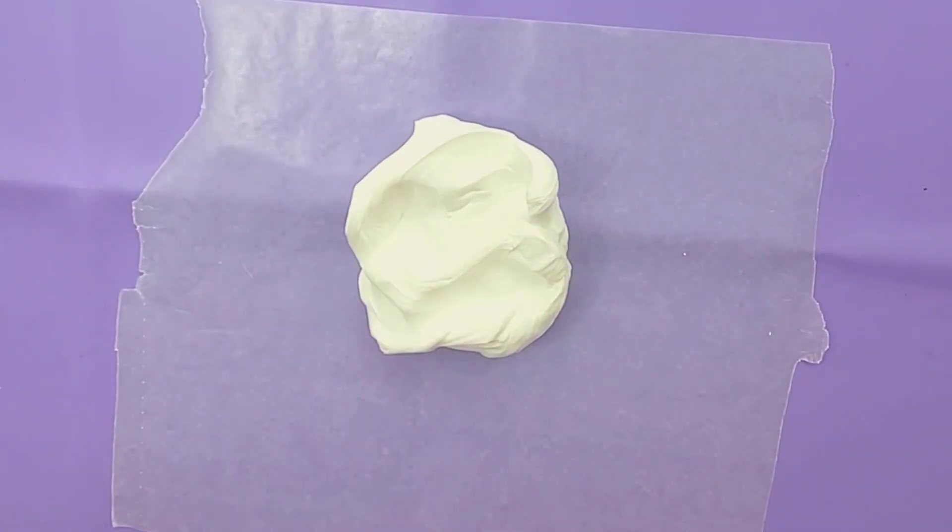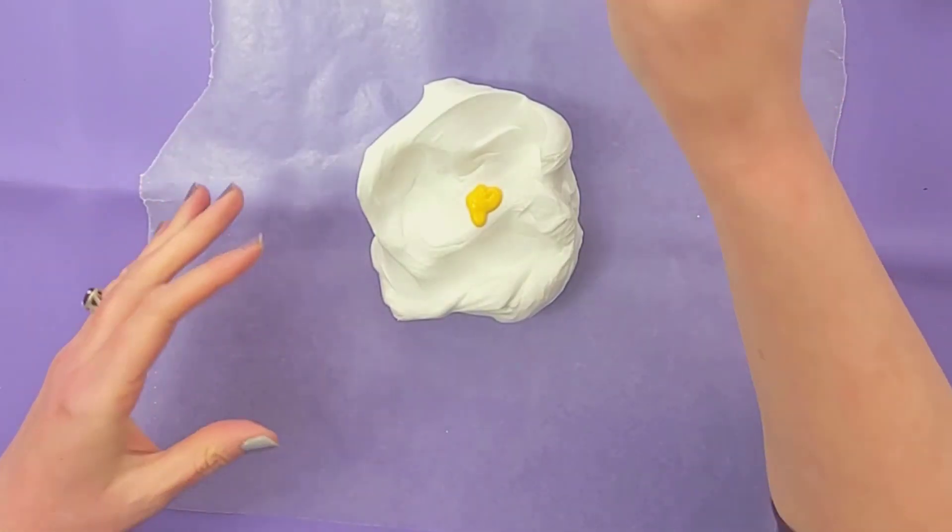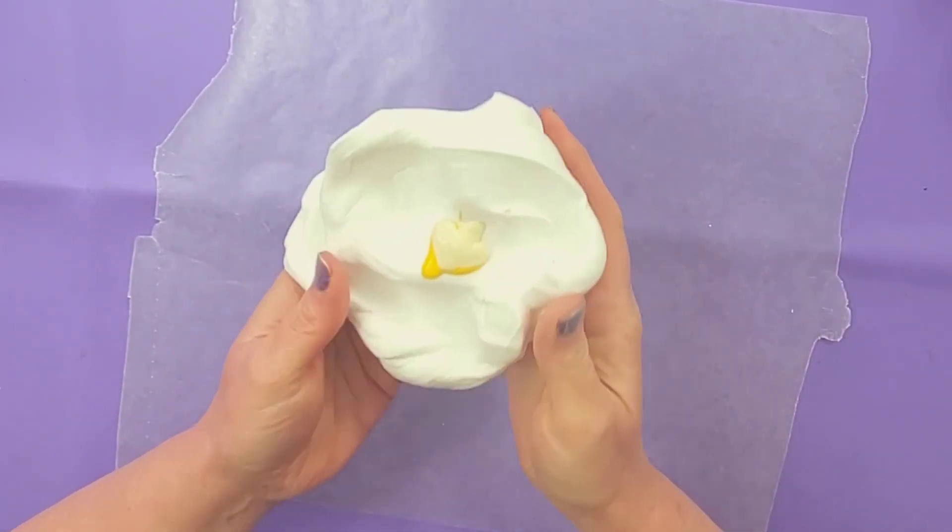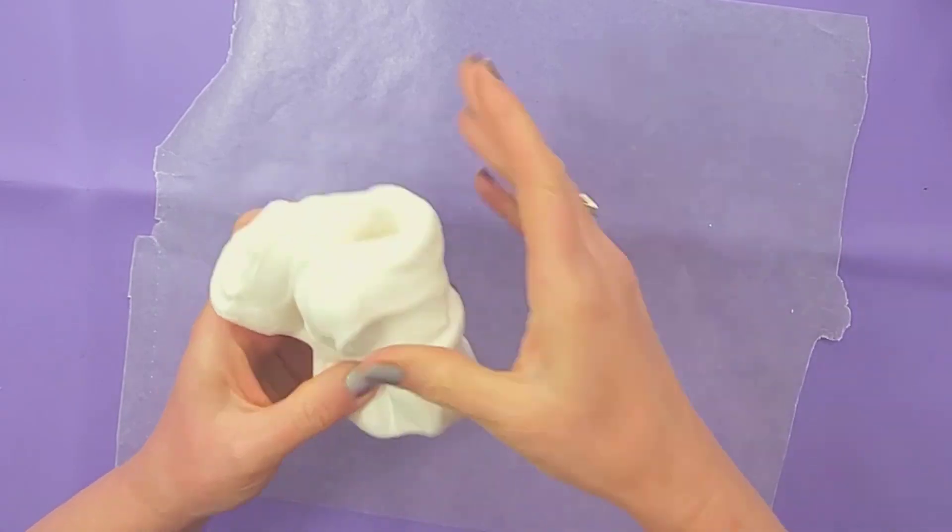I'm going to add some color to give it a base color. I'm using Apple Barrel yellow and a little bit of antique white, then mix that into your clay really well.